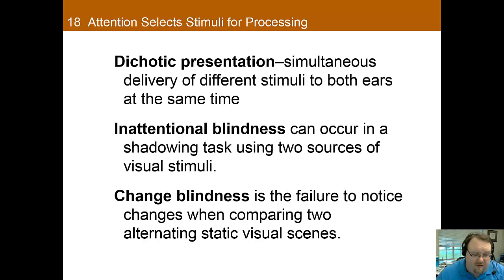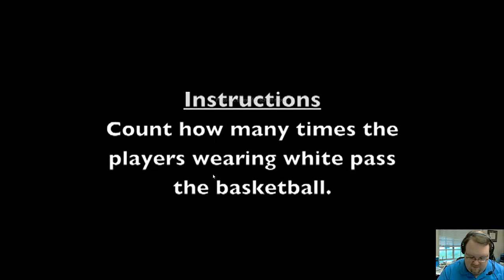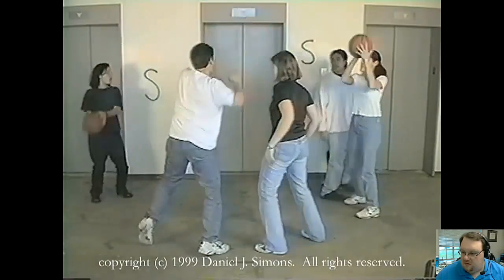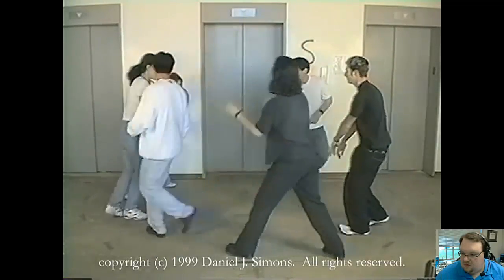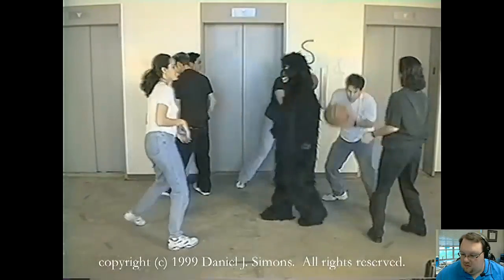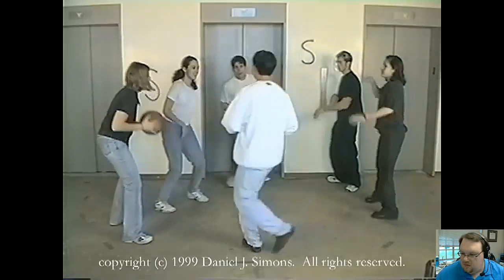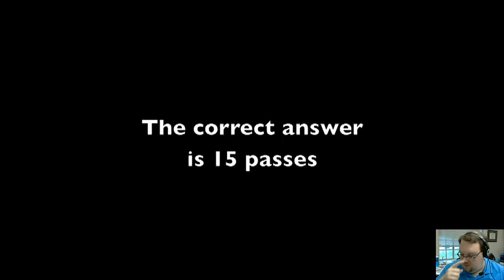I have a brief video — you've probably seen something like this, but for those who haven't, you're in for a real treat. This is a test of selective attention. Count how many times the player wearing white passes the basketball. How many passes did you count? The correct answer is 15 passes. But did you see the gorilla?